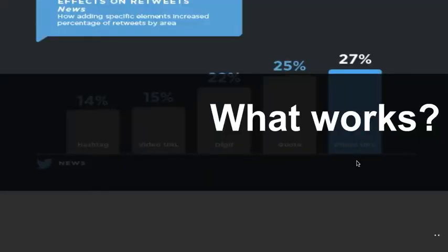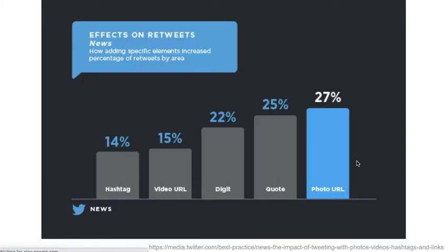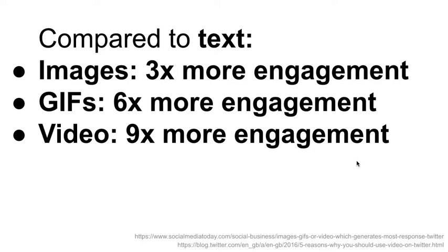What works on social media platforms, and Twitter in particular? Anything visual is going to have a big impact on the likelihood that someone is going to retweet your tweet. Research by Twitter shows that different elements have different impacts on retweet likelihood. Hashtags are useful, videos are useful, just a URL helps. Numbers actually have a big impact, and quotes are even more effective, as a tweet with a number or quote indicates some factual basis and original information. But photos performed better than all of those.